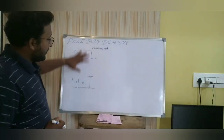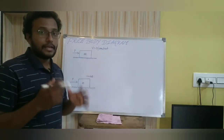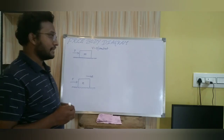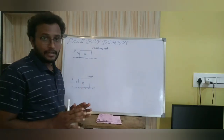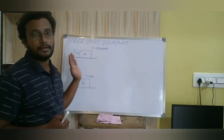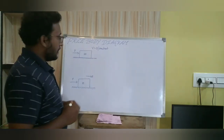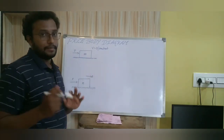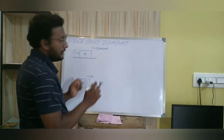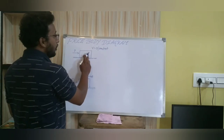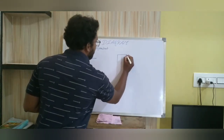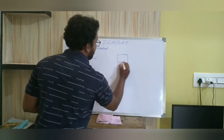Now, to write the free body diagram for these two cases, we follow three steps. The first step is we will neglect all the surroundings and write only the block of mass M. This is the first step in writing the free body diagram.